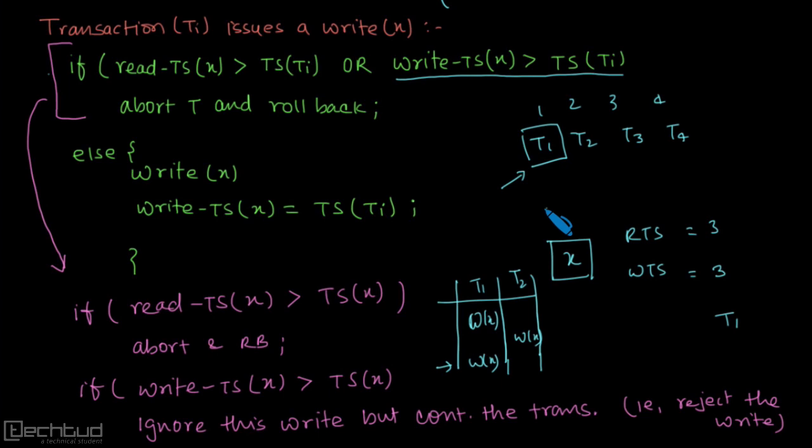It will ensure view serializability, but it will not be able to ensure conflict serializability. So for Thomas Write Rule, the idea is simple that as we know that the later transaction has performed some write, so this write is now useless and that's why we ignore it.